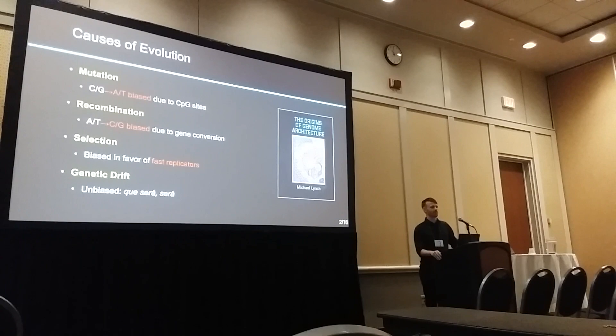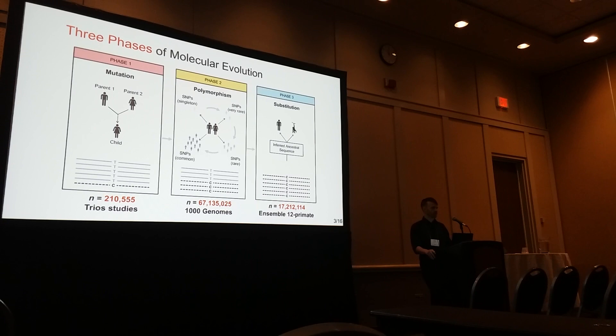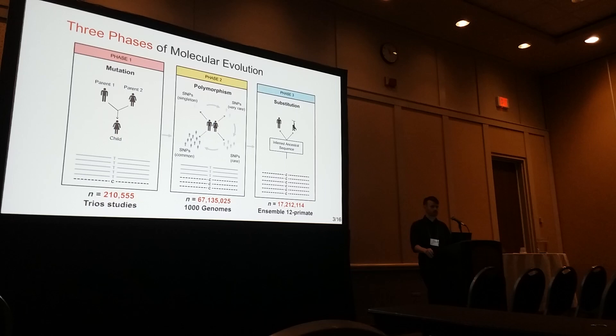Selection and drift we know very well. According to the neutral theory of molecular evolution, there are three phases of molecular evolution: mutation — new variants; polymorphism — variants that are at intermediate frequencies, perhaps becoming more common; and then substitutions, that is, fixed differences between species.